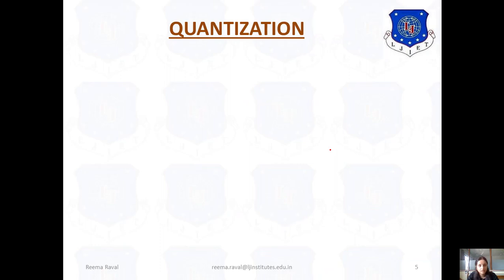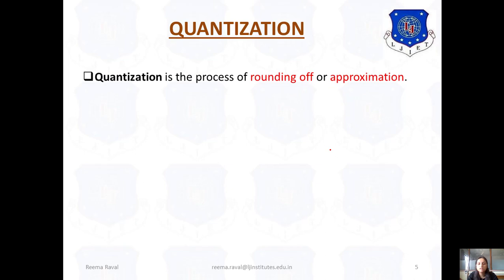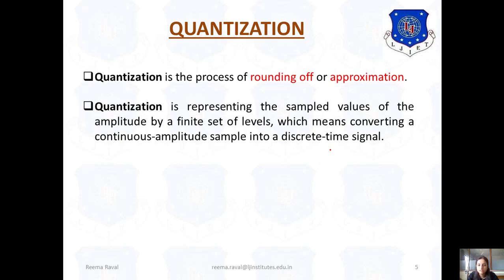Now the next topic is quantization. This is the second step of the analog-to-digital conversion process: the first is sampling, the second is quantizing, and the third is encoding. Quantization is a process of rounding off or approximation of the original analog input signal. Quantization is defined as representing the sample values of the amplitude by a finite set of levels, which means converting a continuous amplitude sample into a discrete time signal.